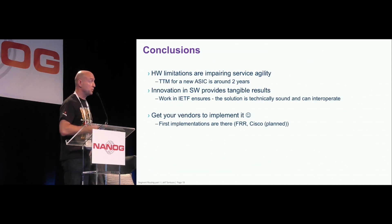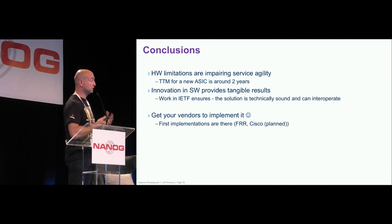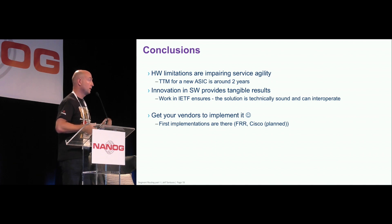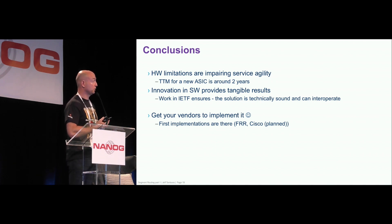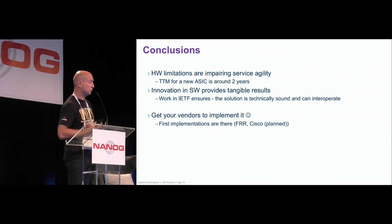Conclusion: we know there are hardware limitations. Unfortunately, it's an expensive and time-consuming process to re-spin a new ASIC — usually somewhere between 18 to 24 months. Doing software computations that help you address these limitations is important and it is possible. We are in a software-driven world, and even with limited hardware resources you can work around them. Working through IETF ensures interoperability. There are already implementations — FRR is coding right now, Cisco has planned, and Juniper is okay with it, so hopefully they'll do it. Get your vendors to implement it — software as well as hardware.